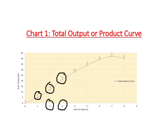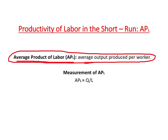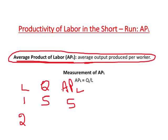Through the total output curve, we can also measure average productivity. For average productivity, we use the concept called average product of labor, or APL in short. This is simply the average output produced per worker, and we measure it by dividing total output by total number of workers. When we had one worker, output was 5 so APL was 5. When we had two workers, total output was 12 so average productivity per worker was 6.